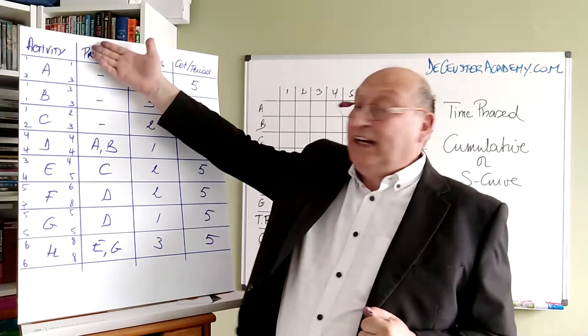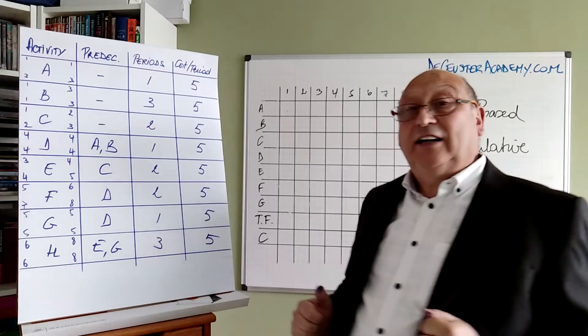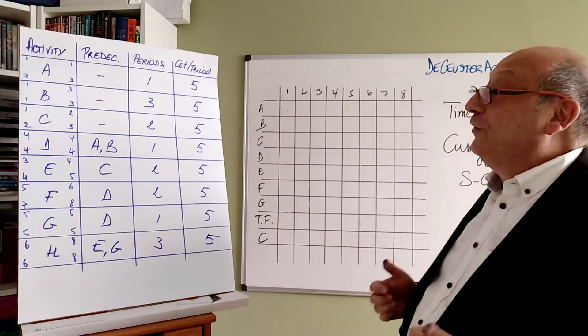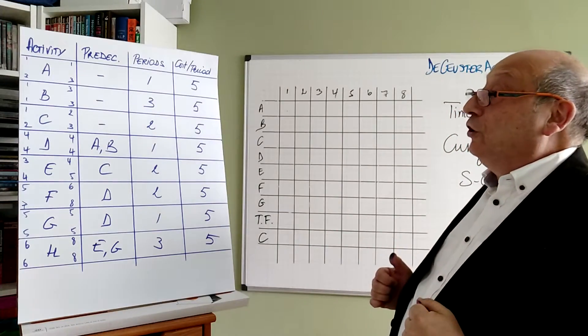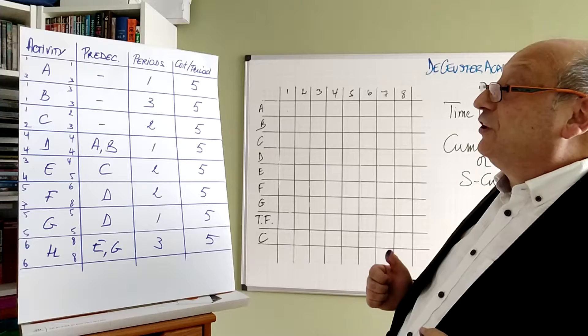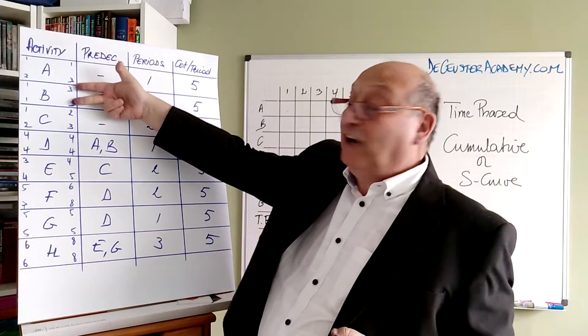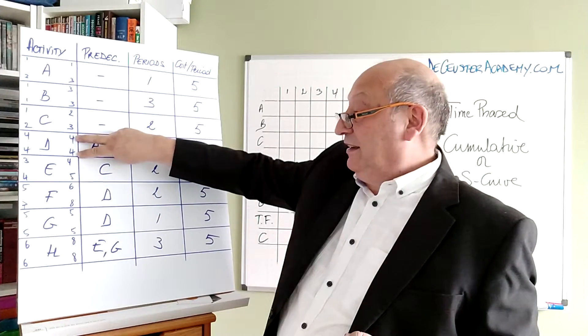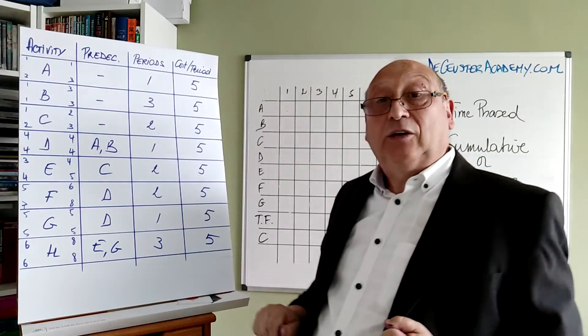On the table here you find the early start, early finish, late start, and late finish of all the activities. We also found out which activities are on the critical path because those two values are the same. So we have B, D, G, and H which are critical.